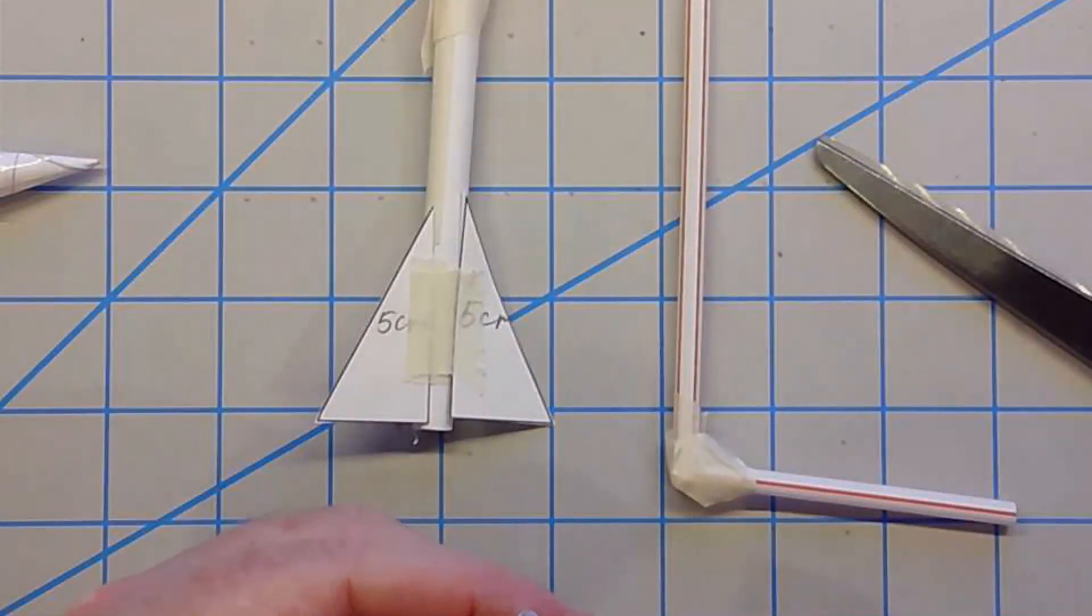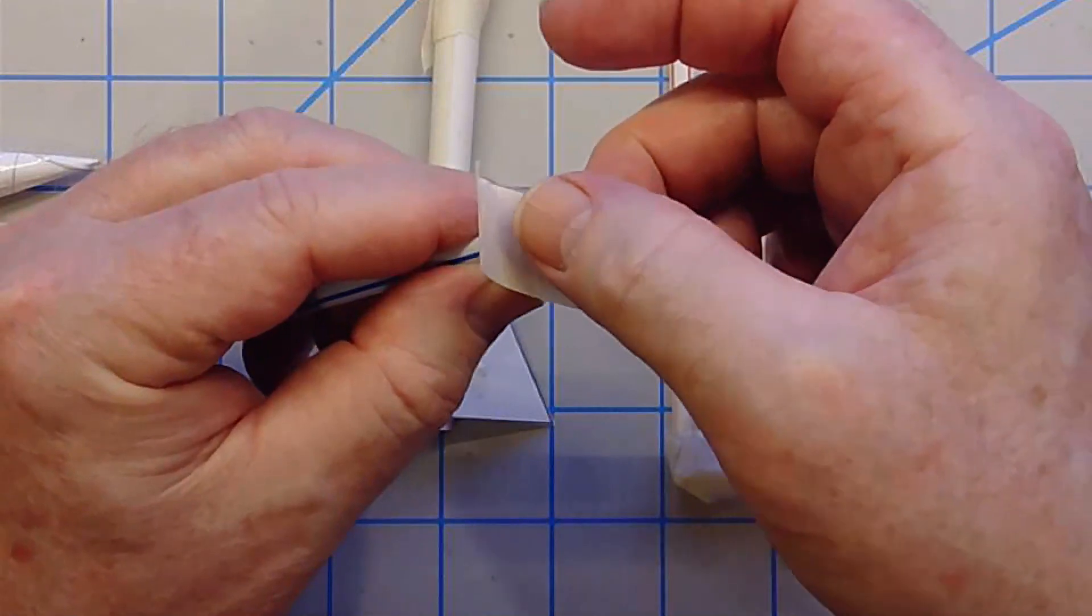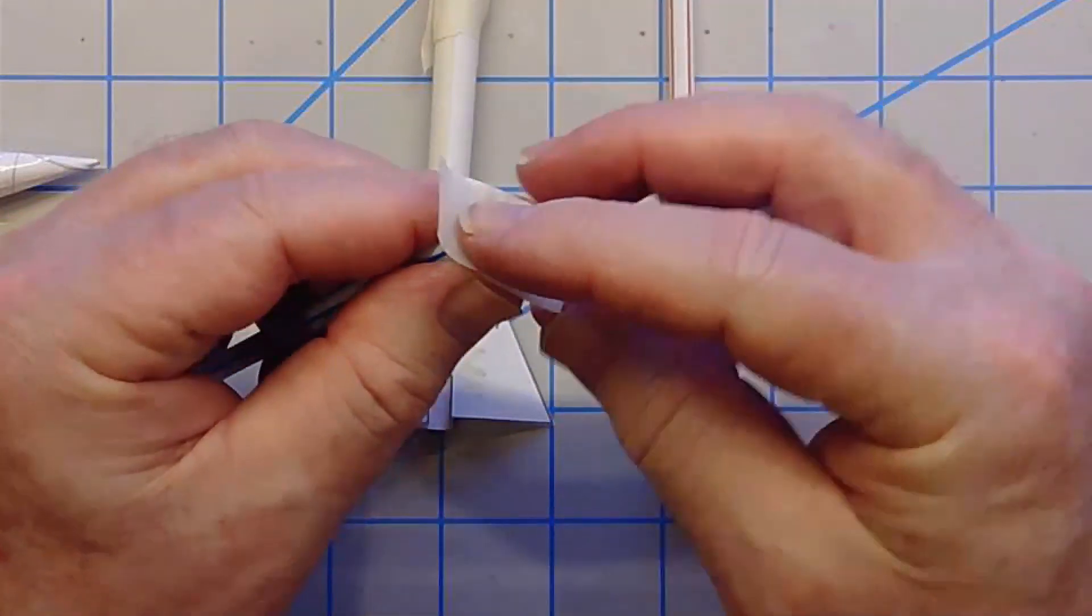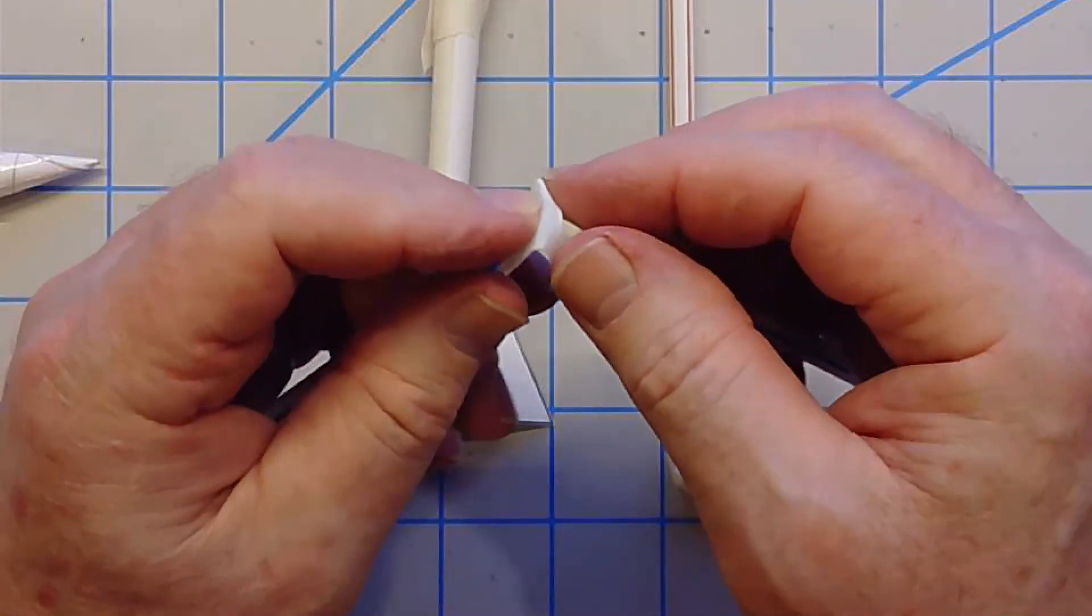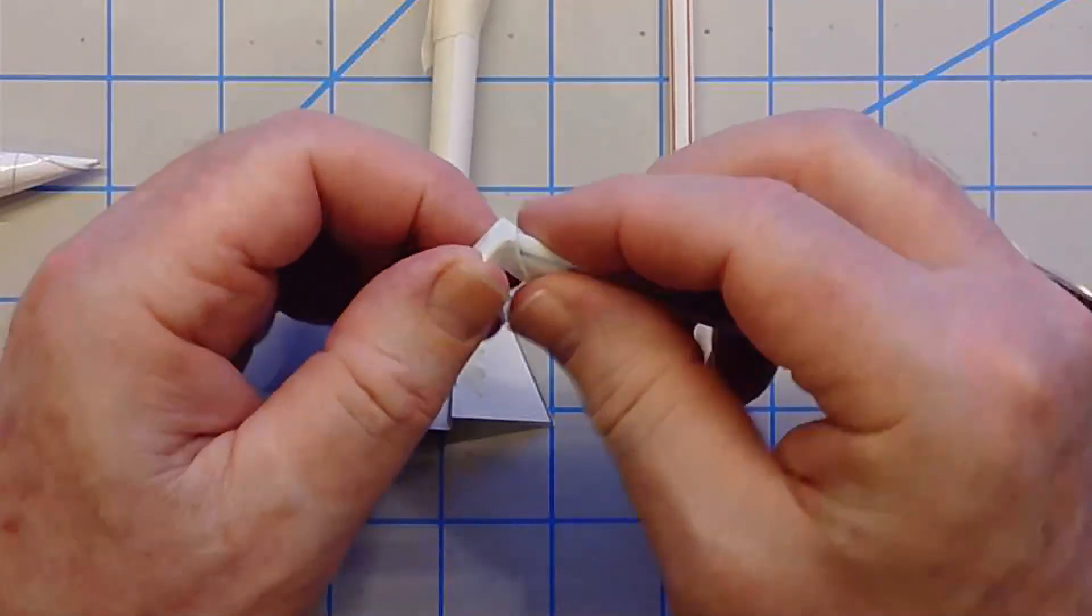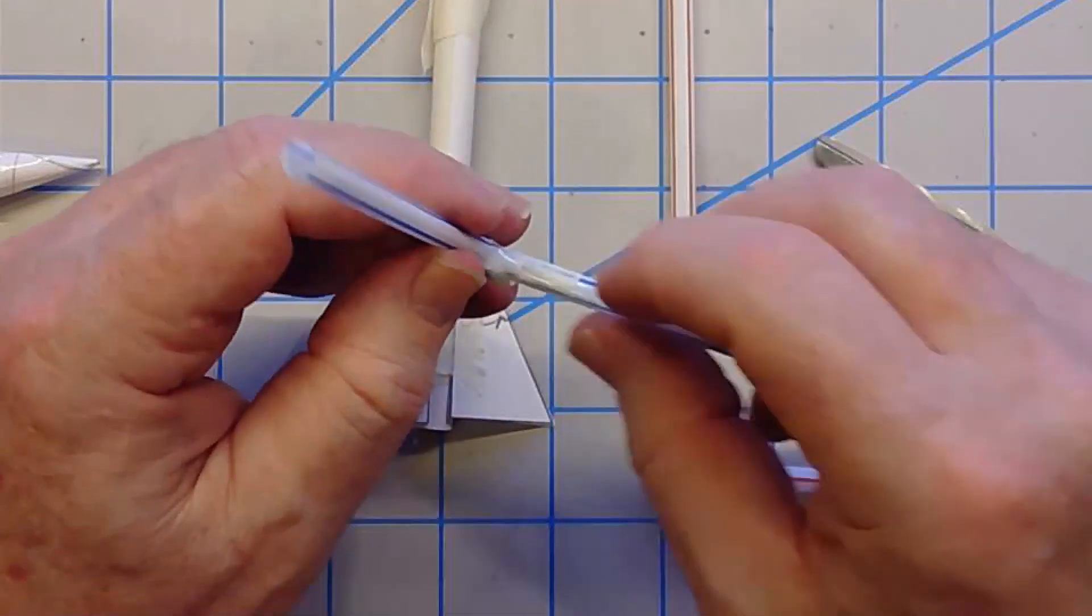So I'll do that now. I'll just put my piece of tape on like this. Okay, and wrap it around. And now wrap a piece around the inside part.